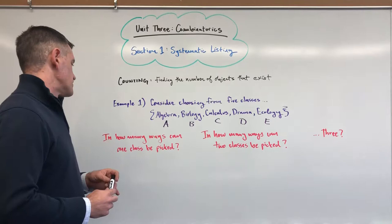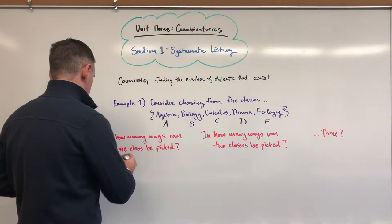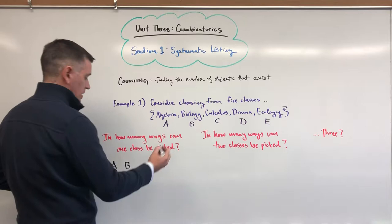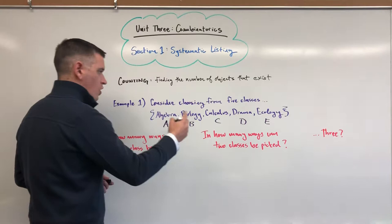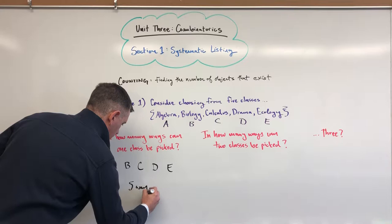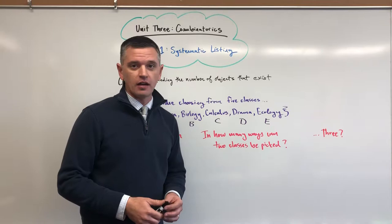Question one: In how many ways can one class be picked? Five ways. So maybe we pick Algebra, maybe we pick Biology, maybe we pick Calculus, maybe we pick Drama, or maybe we pick Ecology. So we would say this can be done in five ways. No big brain buster there.